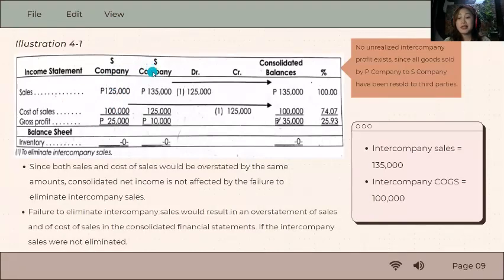S company, the subsidiary, had sales of 135,000 when it sold to the outside party. Its cost was whatever the parent sold it for—that's where it got the amount, 125,000. Then we eliminate. We eliminated P's sale to the subsidiary and also eliminated this cost of sale. These are their transactions with each other.